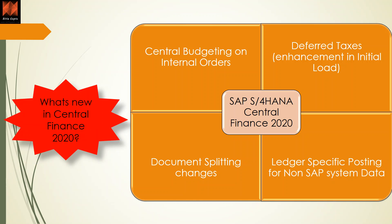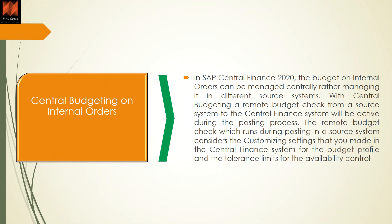We will discuss here what are the changes which happened in release 2020 for SIFIN. The first major change is central budgeting on internal orders. Then we have document splitting changes, ledger-specific posting coming from non-SAP systems, and also deferred tax enhancement in initial load.